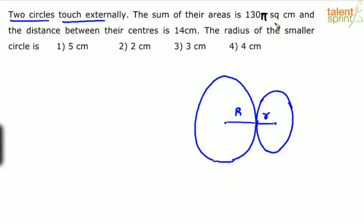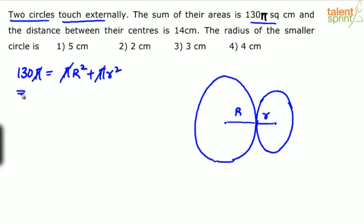The sum of their areas is 135 square centimeters. You know that the area of a circle is πr². So we can say 135 equals the sum of their areas: π·R² + π·r². Pi gets canceled, so we know that R² + r² equals 130.